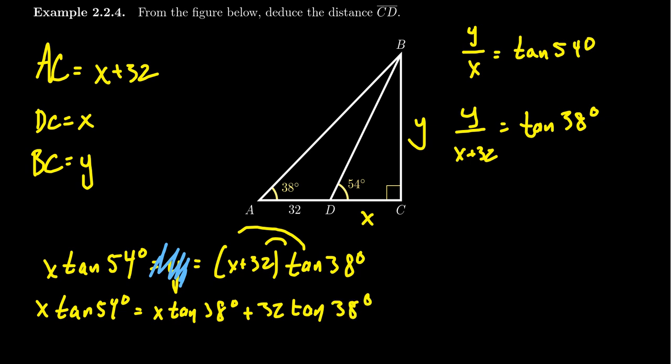We want to combine X together. So subtract X times tangent of 38 degrees from both sides of the equation. This will then give you on the right-hand side X times tangent of 54 degrees minus X times tangent of 38 degrees. And this is going to equal 32 times tangent of 38 degrees on the right-hand side.